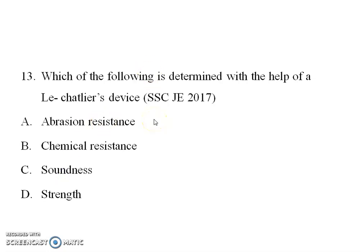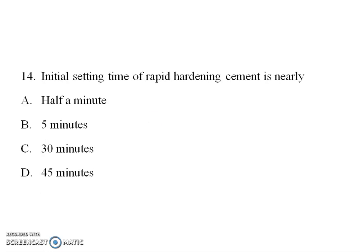Next question: Which of the following is the help of a Le Chatelier device? The Le Chatelier device is used for soundness of cement. Next question: Initial setting time of rapid hardening cement — options are half a minute, 5 minutes, 30 minutes, 45 minutes. Rapid hardening cement initial setting time should not be less than 30 minutes minimum, and final setting time should not be greater than 10 hours.